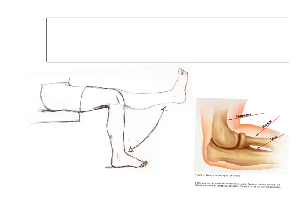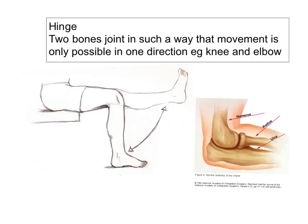The hinge joint is where two bones join in such a way that movement is only possible in one direction. For example, the knee joint and the elbow joint. It's a bit like the hinges in a door — you can only open the door in one direction, backwards and forwards. It can't go any other way.